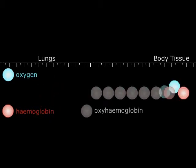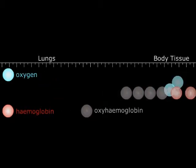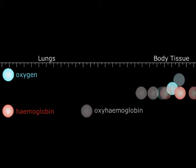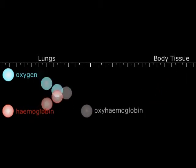In the lungs, haemoglobin absorbs oxygen to form oxyhaemoglobin and transports it around the body. When blood reaches the body tissues, the reverse happens. Oxyhaemoglobin readily gives up oxygen.